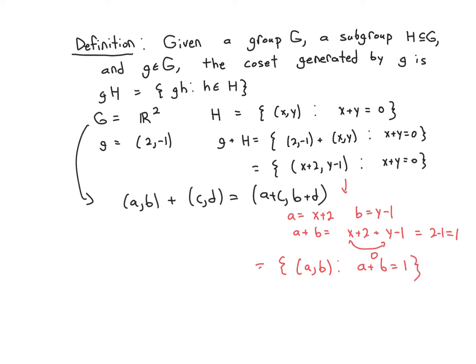So in fact, actually you have seen cosets before in linear algebra, when you're talking about R to the n, and you're talking about a matrix equation Ax equals 0, so that defines a subspace h, the null space of the matrix. But you also talk about Ax equals b,